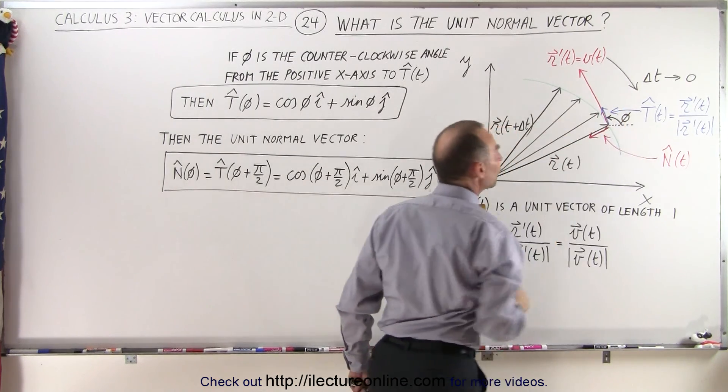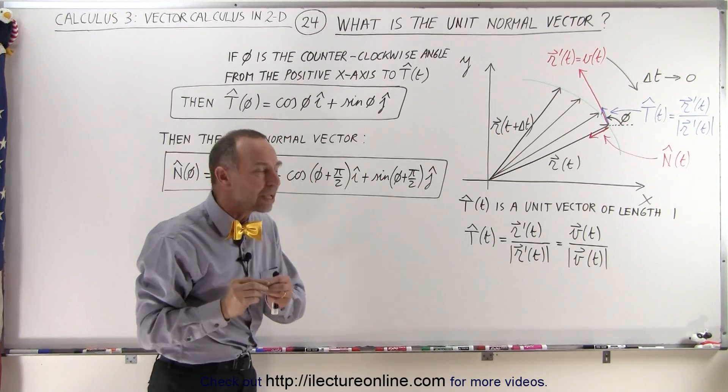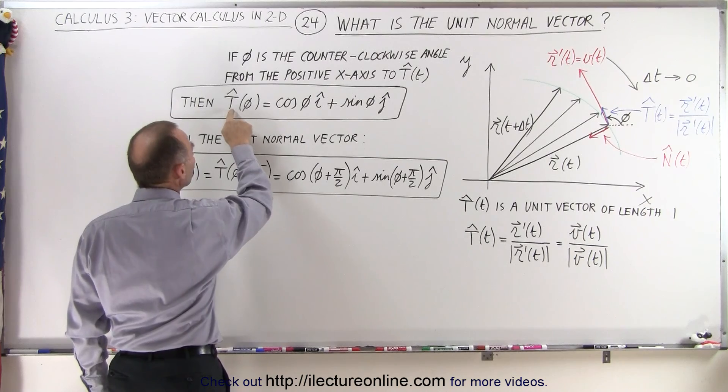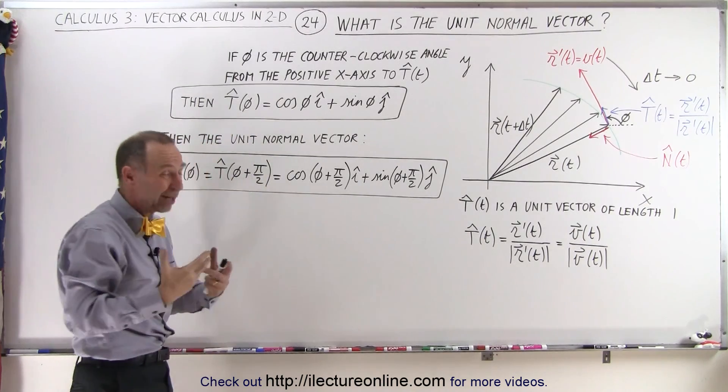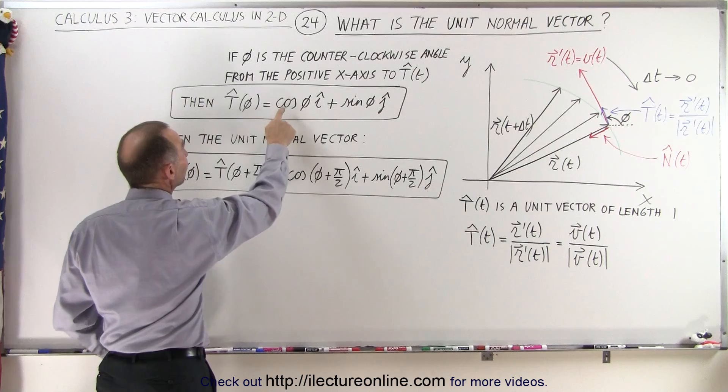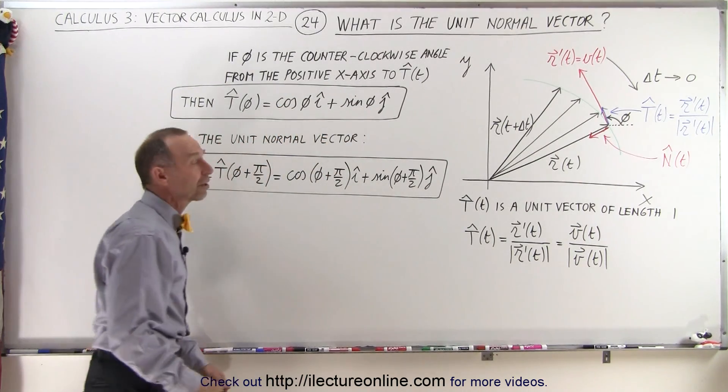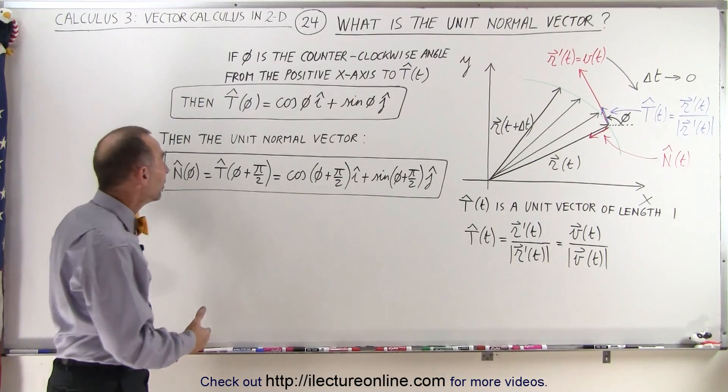If we define that angle by the angle phi, then we can define the unit tangent vector—that's how we pronounce it, unit tangent vector—as a function of phi as the cosine of phi in the i-direction plus the sine of phi in the j-direction.